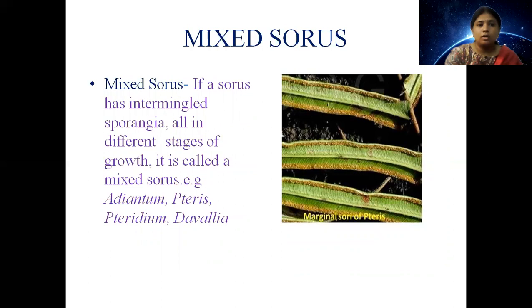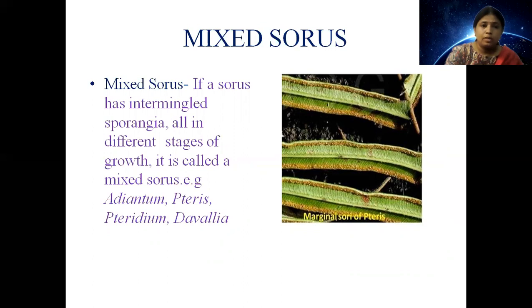Mixed sorus: if a sorus has intermingled sporangia all in different stages of growth, it is called a mixed sorus, as in Adiantum, Pteris, Marsilea and Davallia.